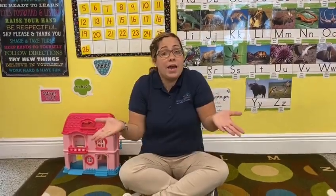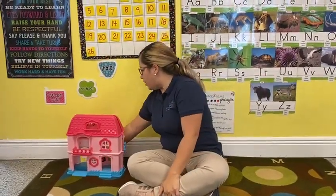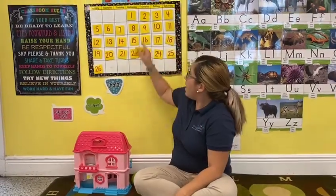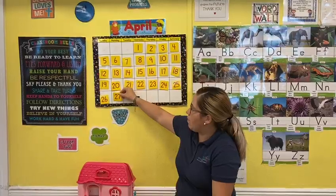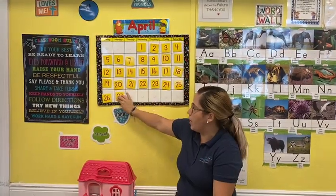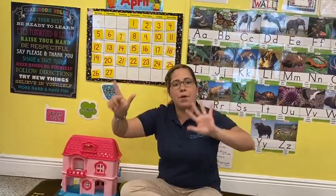What day is today? Today is Monday, April 27th. Two and a seven makes number 27. And how many days do we have in a week? Seven. There are seven days in a week: Sunday, Monday, Tuesday, Wednesday, Thursday, Friday, Saturday.